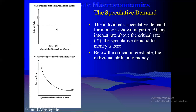For example, assume that at the critical interest rate a person had 100 Ghana cedis — using 50 cedis for bonds and holding 50 cedis as money. With an increase in the interest rate above the critical point, they will not hold any money at all; they put all their money into bonds. Their speculative demand for money becomes zero because they anticipate the interest rate will fall, giving them a higher face value for their bonds.